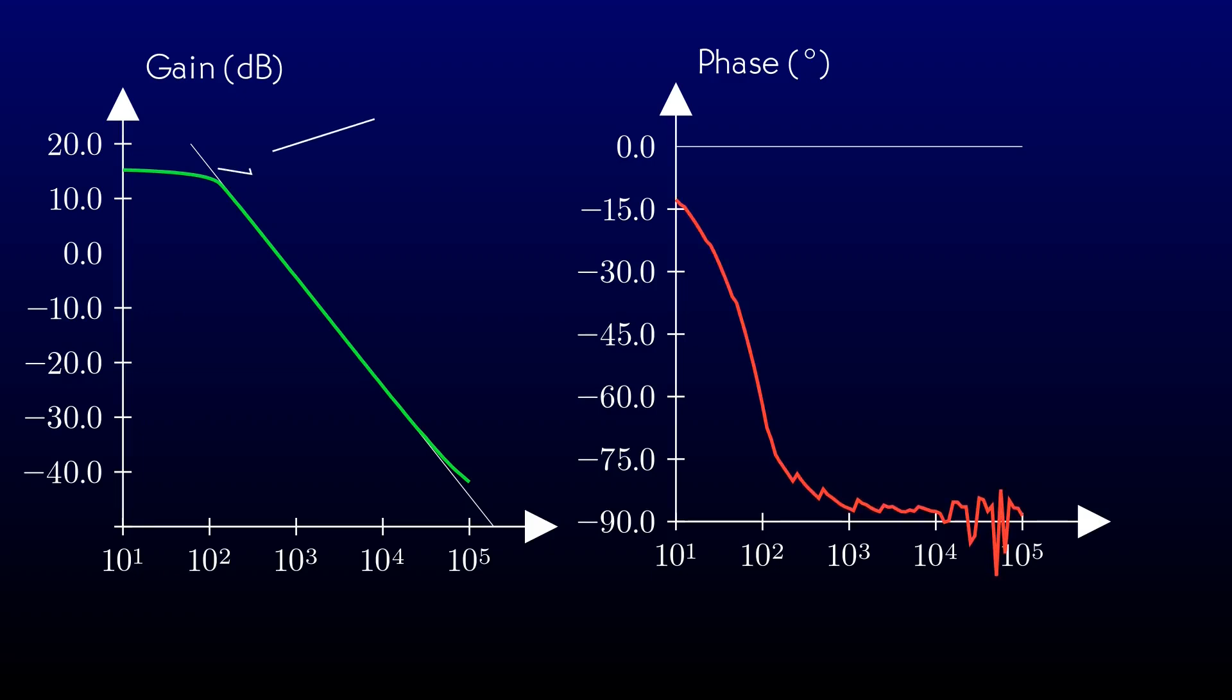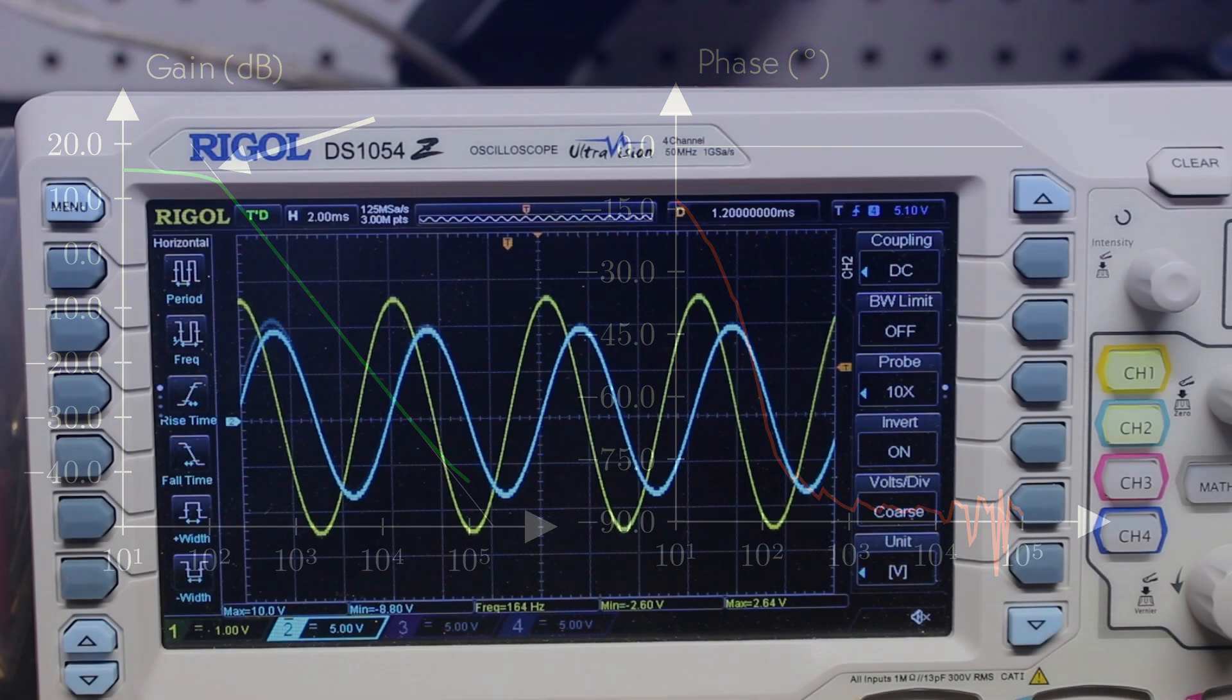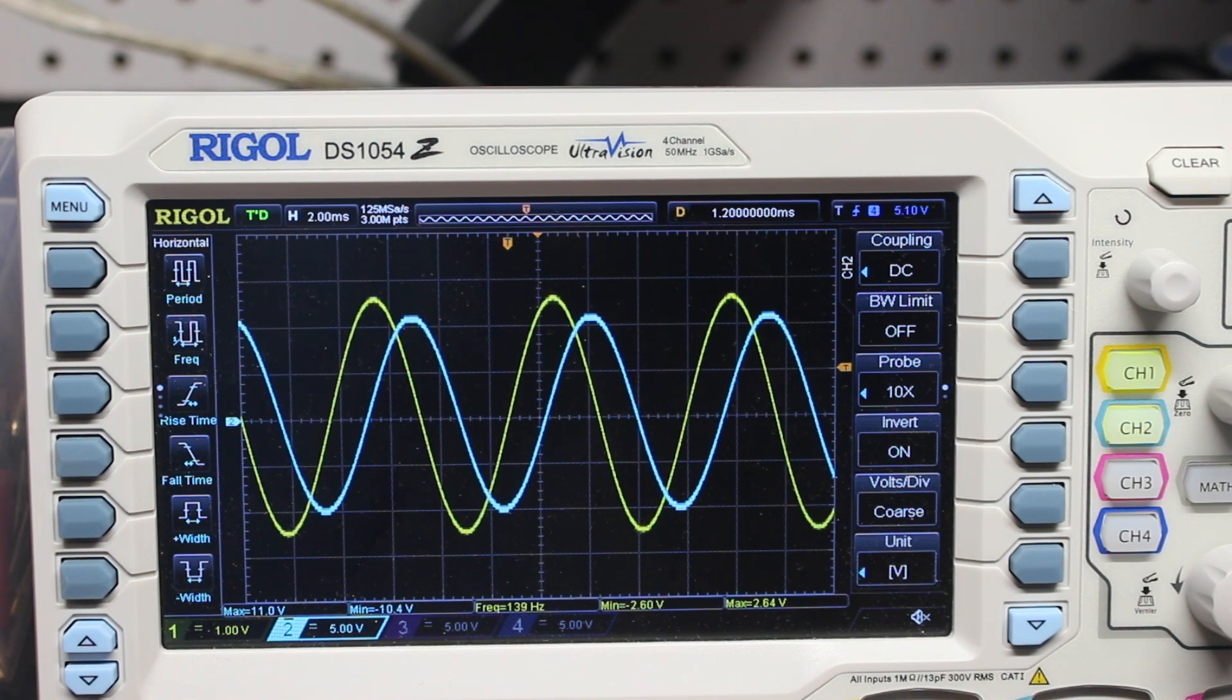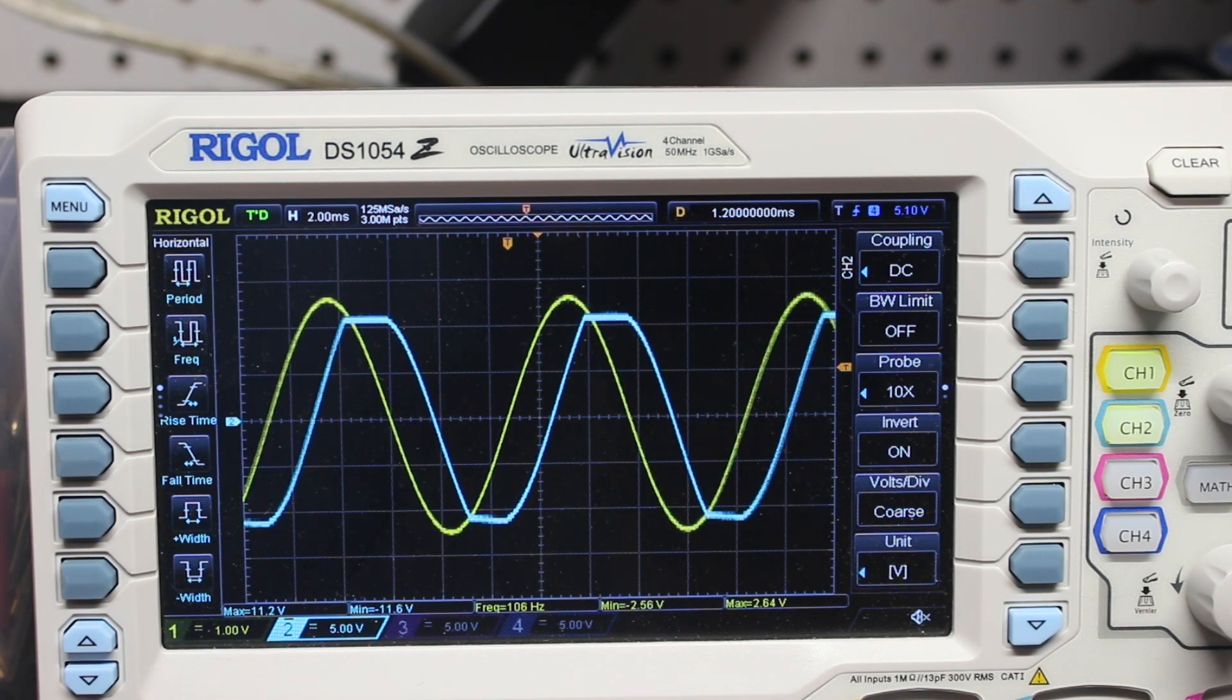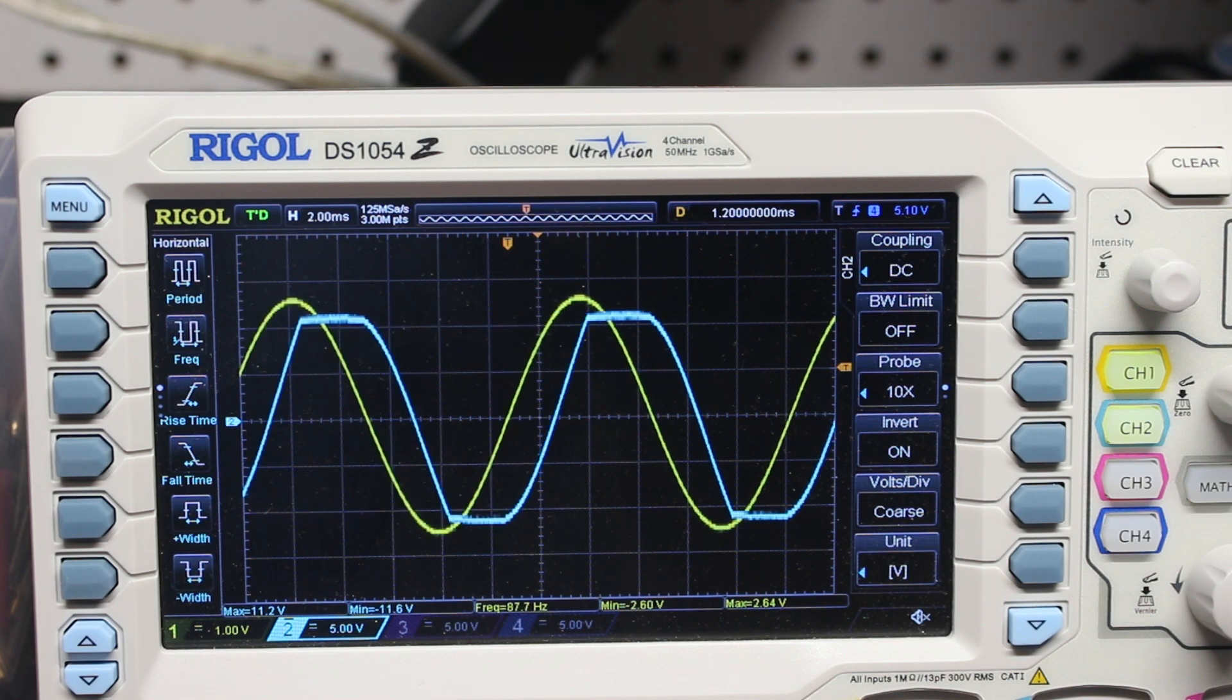Well, obviously, the gain can't go up to infinity as the frequency goes down to DC. When we look at the waveforms, we see that what has happened is that the output signal from the integrator has reached the limits of the op-amp, and the signal is starting to clip.